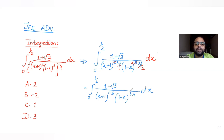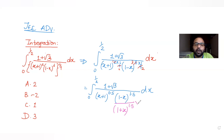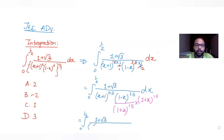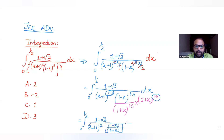Now I want to make one expression's power match the other. I multiply and divide by (1+x)^1.5 in the denominator. This turns the integral into the integral from 0 to 1/2 of (1+√3) in the numerator, with denominator (x+1)^(0.5+1.5) = (x+1)^2, times (1−x)/(1+x) raised to the same power 1.5.